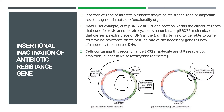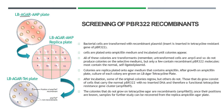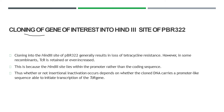In the ampicillin medium, all colonies — both recombinant and non-recombinant — grow, since ampicillin resistance was not inactivated. In the tetracycline medium, non-recombinant colonies grow because they retain tetracycline resistance, whereas recombinant ones do not grow. Now moving on to cloning of the gene of interest.